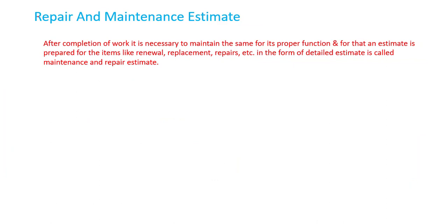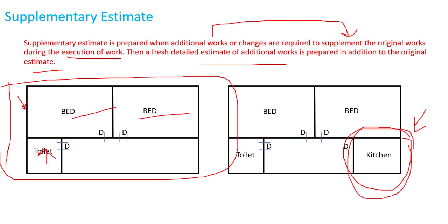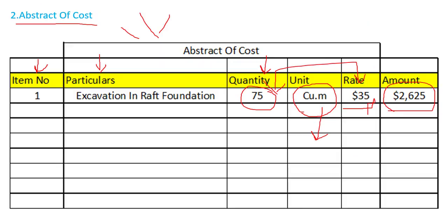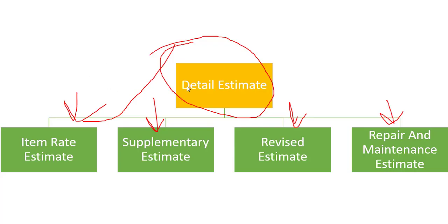The next estimate is called Repair and Maintenance Estimate. As the name suggests, this is a maintenance or repair estimate for a building, road project, or any other project. This covers all about the Detail Estimate, which includes different kinds of estimates and is used for technical sanction: Item Rate Estimate, Supplementary Estimate, Revised Estimate, and Repair and Maintenance Estimate. Hope you really understand the session — we will see you in the next tutorial.